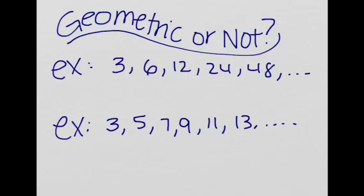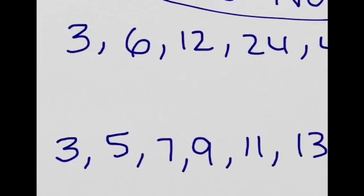Great. Now let's play a little bit of a game, and it's called geometric or not. So we're going to try to see which of these two are geometric, or which one of these are not, okay? Well, our first one is 3, 6, 12, 24, 48, so on. Okay, well let's zoom in.